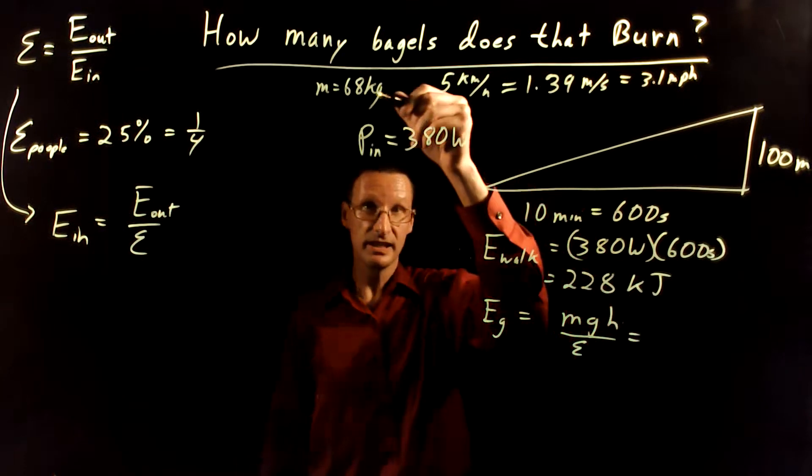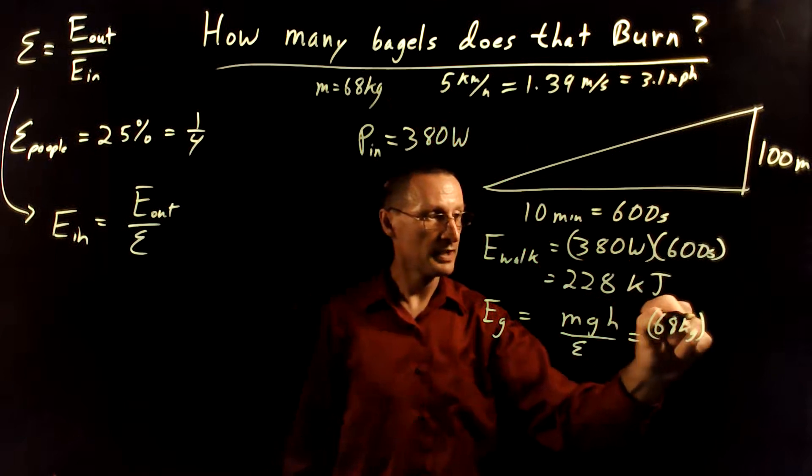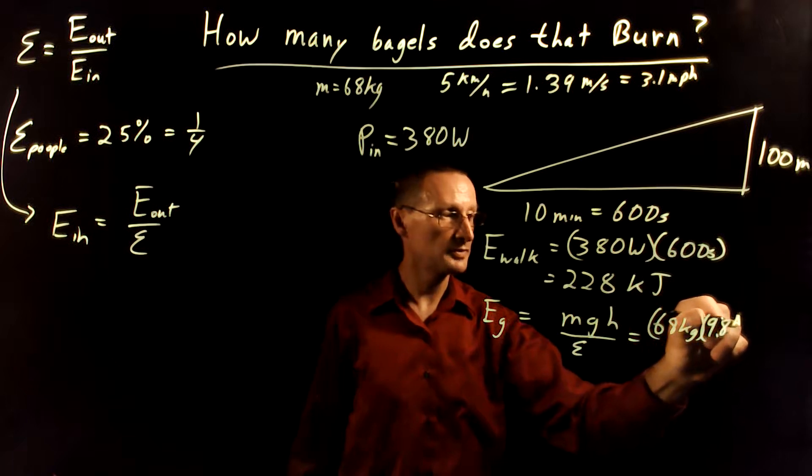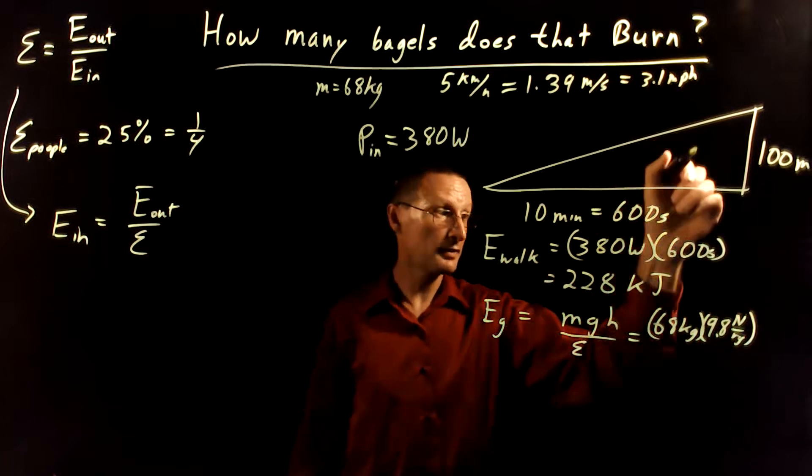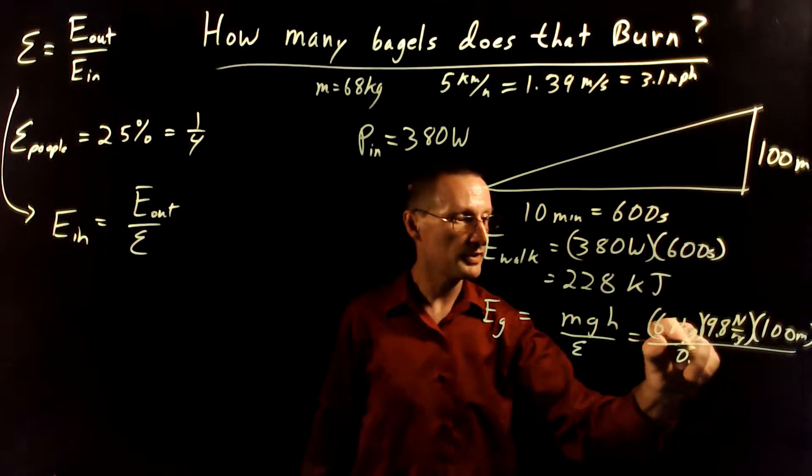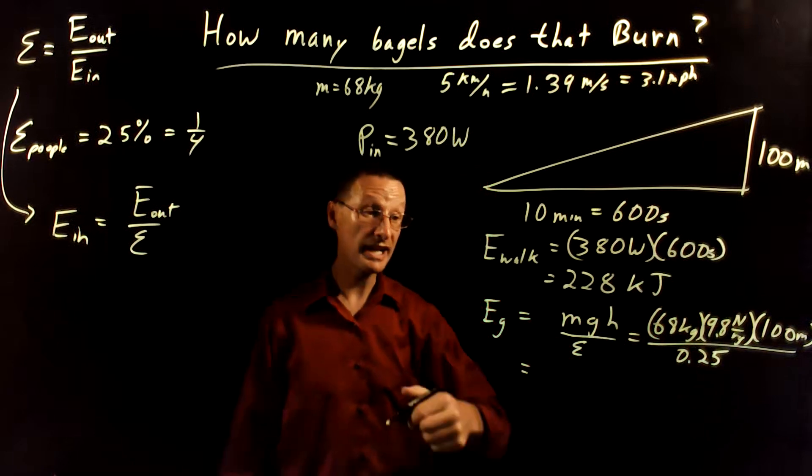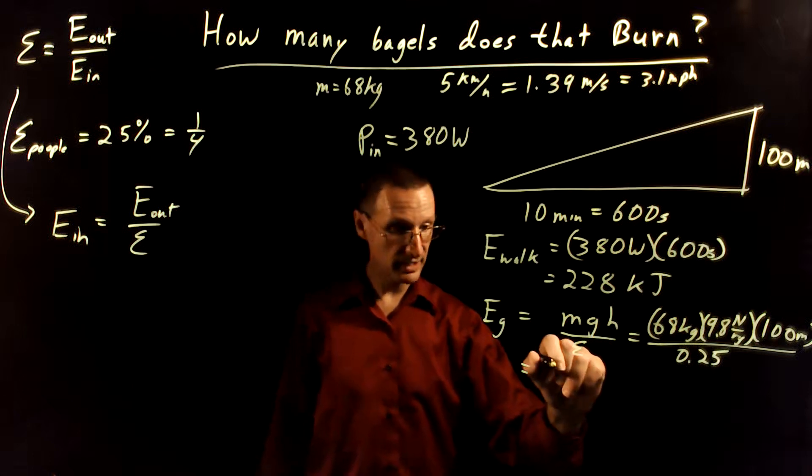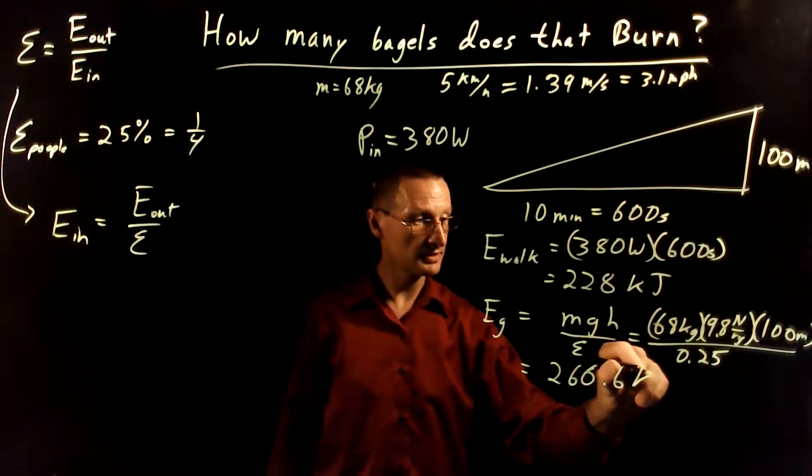So let's go ahead and compute this. In this case, our mass is 68 kilograms. Gravity, the gravitational constant is 9.8 newtons per kilogram. And the height that we're climbing is 100 meters. And then we divide this by 0.25, which is just the ratio has no units. And so when I compute this number, I get about 266.6 kilojoules.